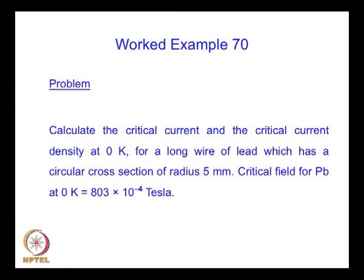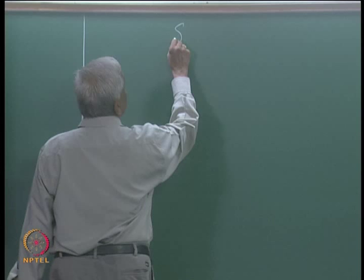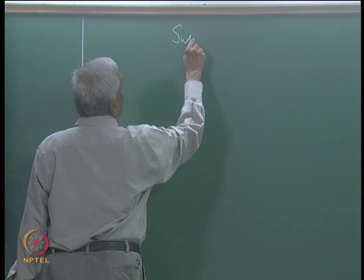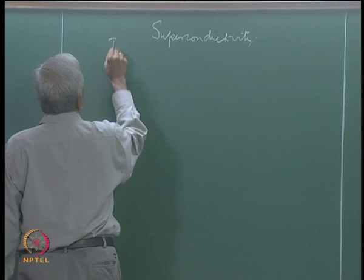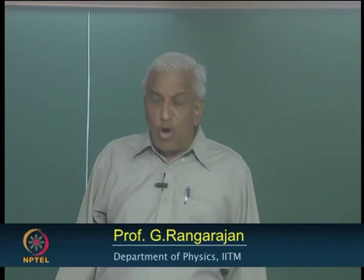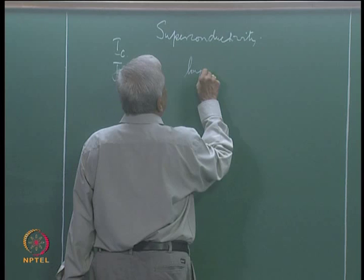Today, we will consider some solved examples on the topic of superconductivity. The first example concerns the critical current and critical current density — specifically, the critical current and density for a long wire of lead at zero Kelvin.